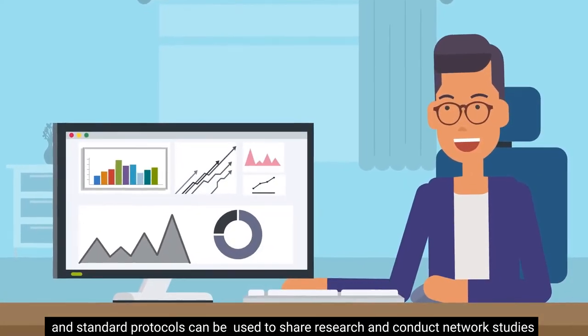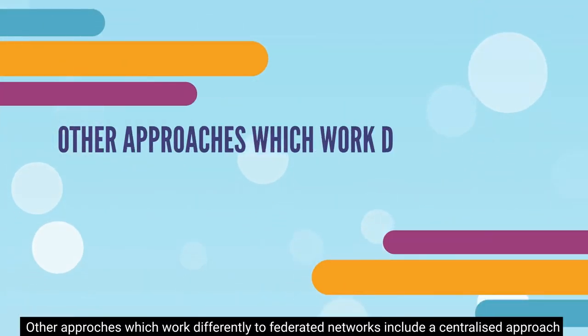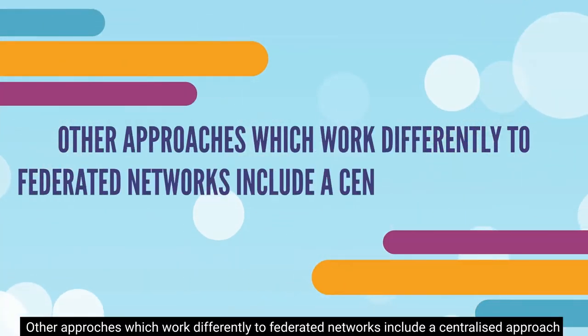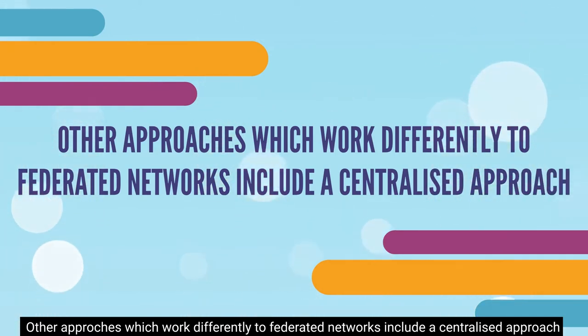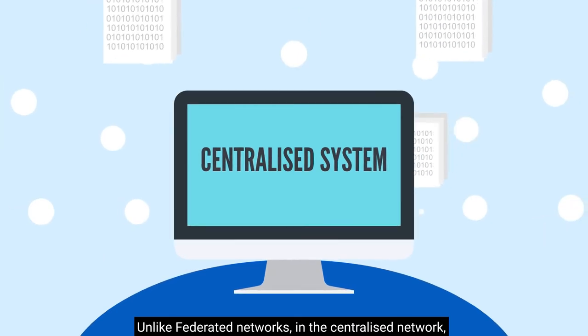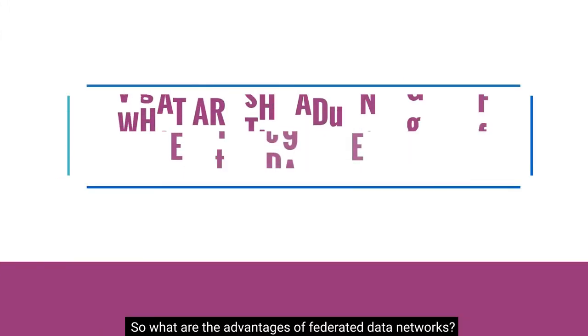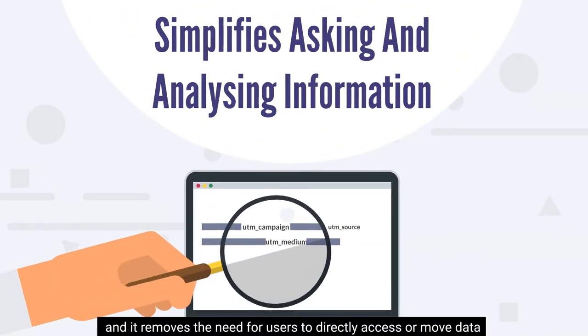When a network is federated, it also means that data is harmonized and standard protocols can be used to share research and conduct network studies, although data may look different at the source. Other approaches work differently to federated networks. In a centralized approach, unlike federated networks, each source must upload their data to a centralized system or house.